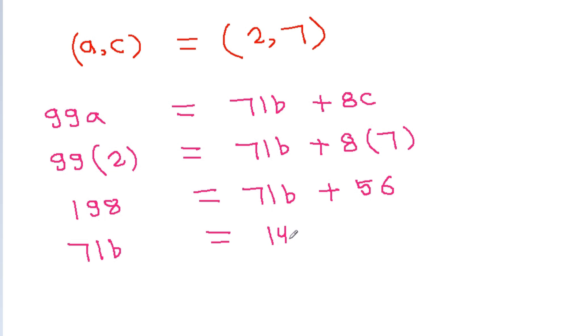So 71b equals 198 minus 56, which equals 142. Therefore, b equals 142 divided by 71, which is 2.